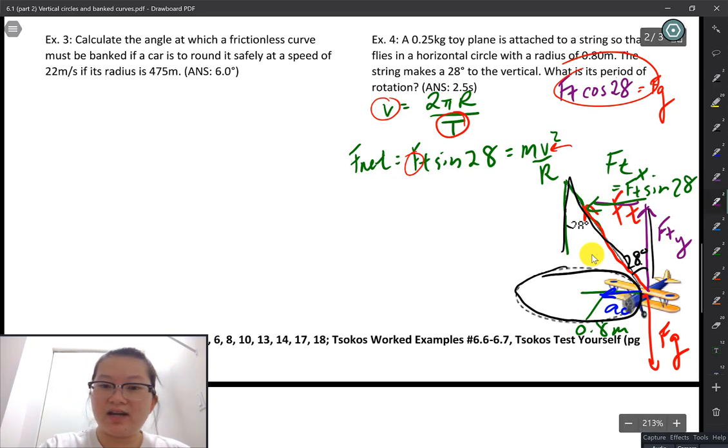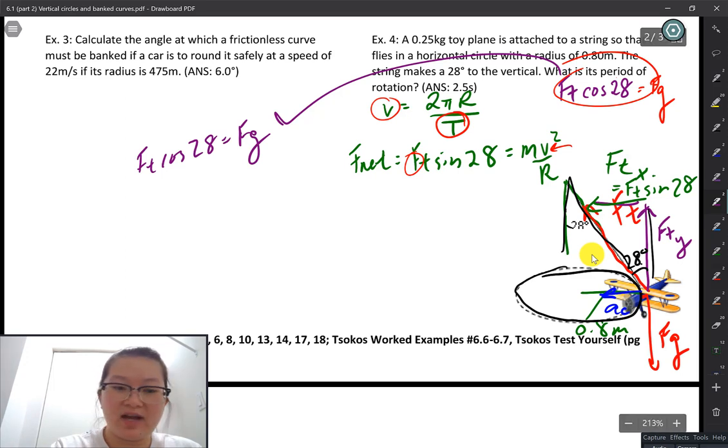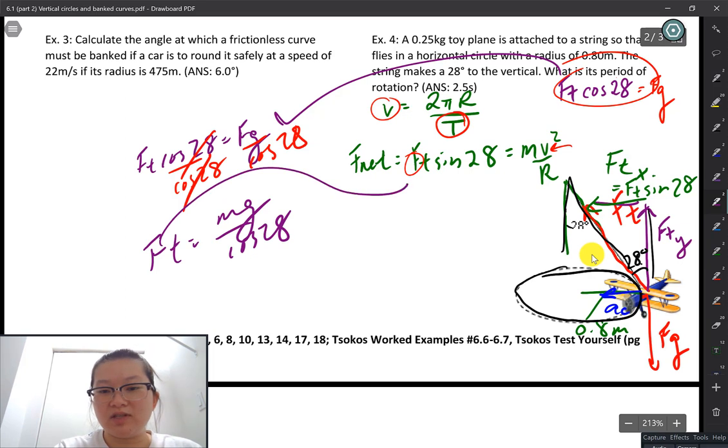So if we just took this guy over here and solve for F_T, that's equal to F_g. So we just isolate for F_T by dividing both sides by cosine of 28. Okay, by 28, which we're going to get F_T is equal to mg over cosine of 28. Then I can substitute that one in there in our F_net equation, which this is going to be mg over cosine of 28 times sine of 28 equals to mV squared over R.